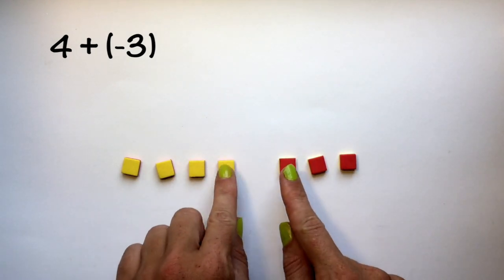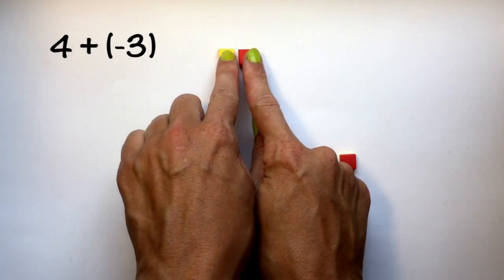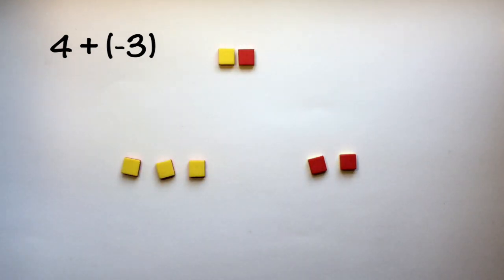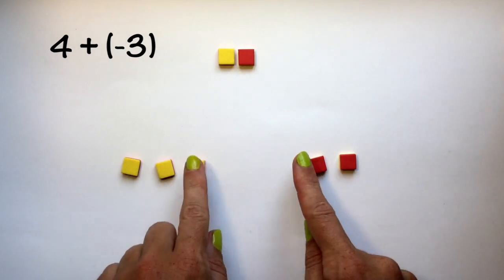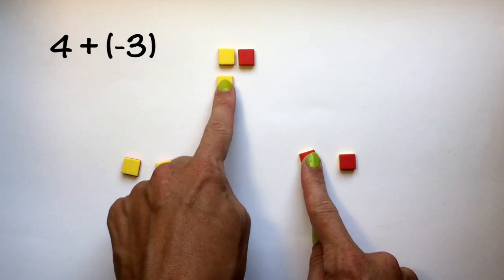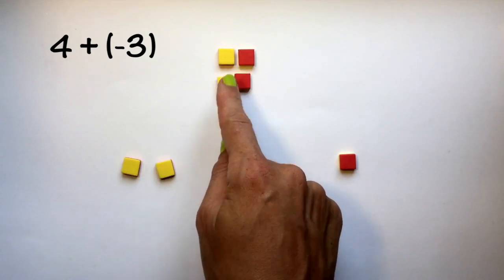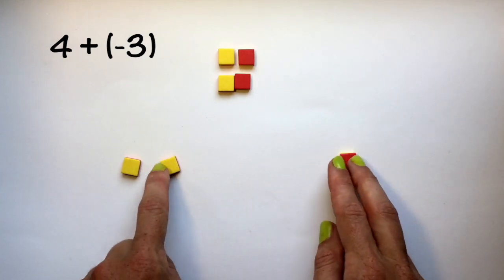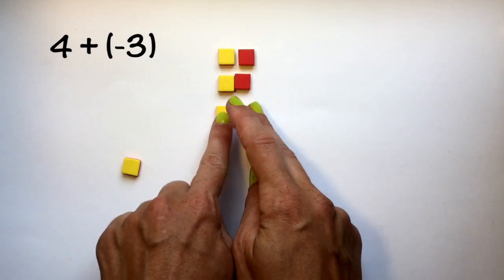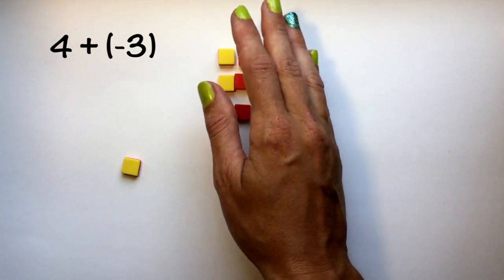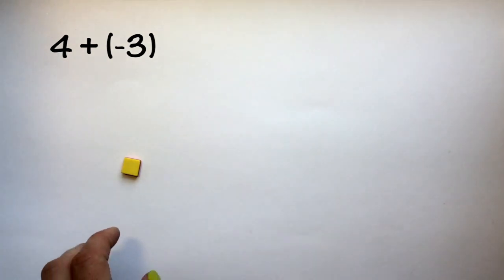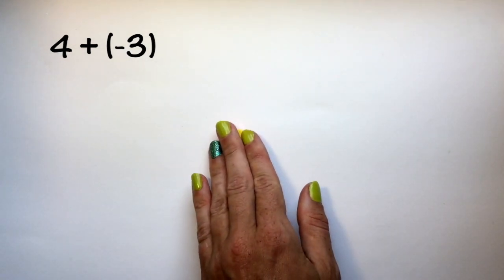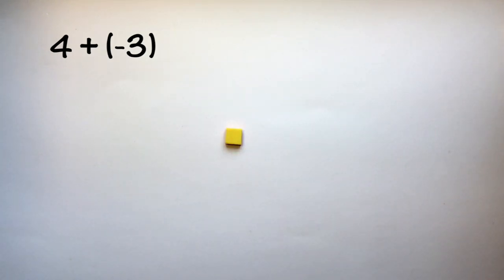We can create zero pairs with one positive and one negative integer. So positive 1 plus negative 1 equals zero. Positive 1 plus negative 1 equals zero. So we have three zero pairs that we can completely remove from our equation to end up with a sum of positive 1. Let's do another example.